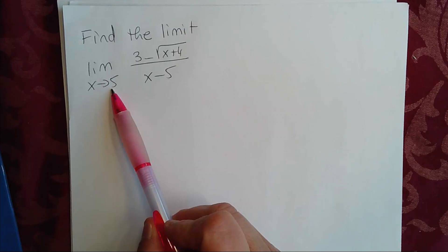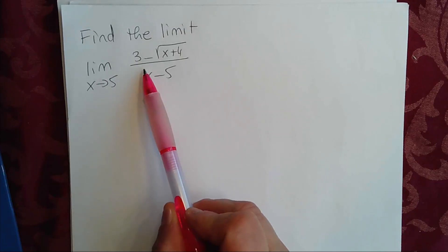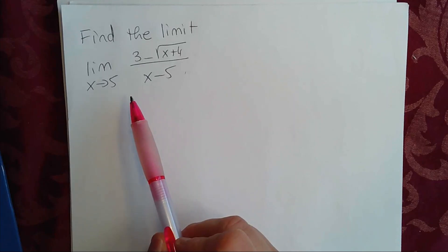Now, if you plug in 5 for x, you're going to realize that you're going to have a 0 in the denominator, so we cannot use direct substitution.